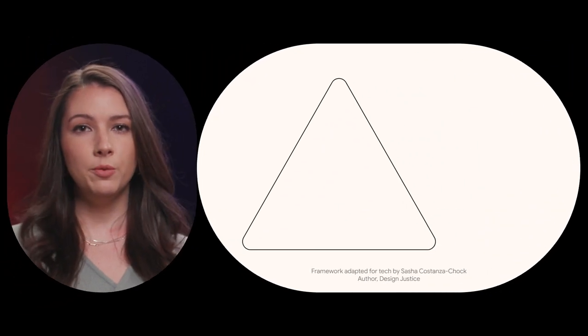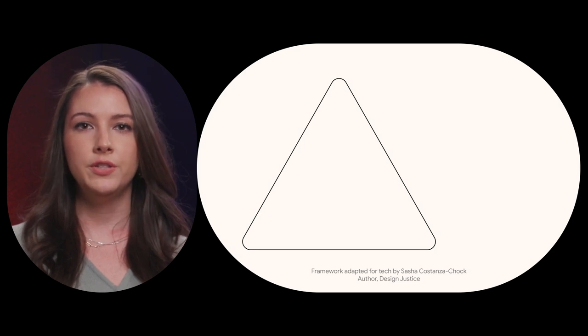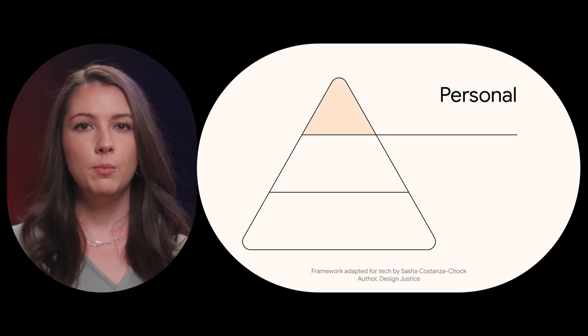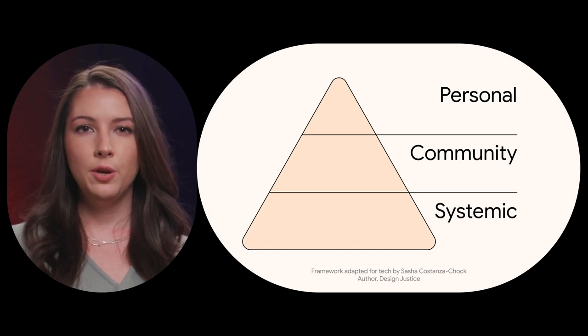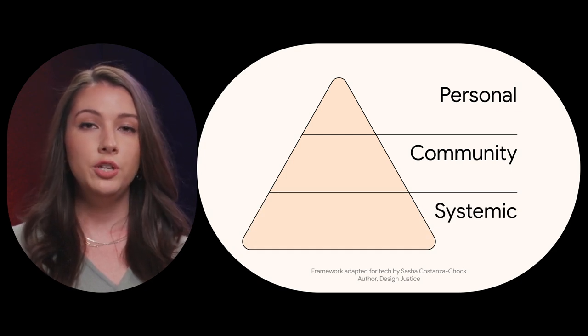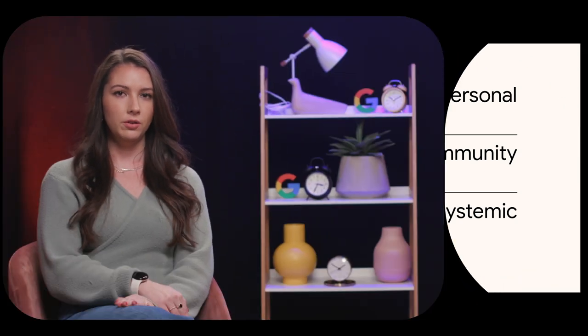Black feminist scholar Patricia Hill Collins gives us a framework to think about how people experience and resist oppression within society at three levels: personal, community, and systemic. This framework was adapted to illustrate the relationship between power and technology by Sasha Costanza-Chalk. Mallory and I are going to walk through examples at these three levels to illustrate how exclusion and inclusion shows up in design and impacts real people.